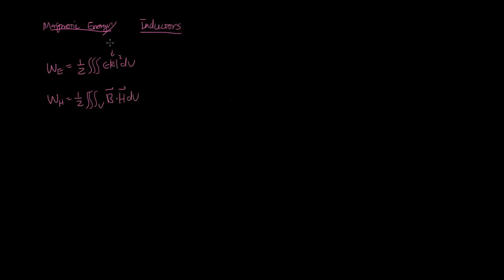We remember we came up with this by doing E dot D. So in this case, we're doing B dot H, or to make it more analogous, D dot E and B dot H. So B is equivalent to D, and H is analogous to E in this case.